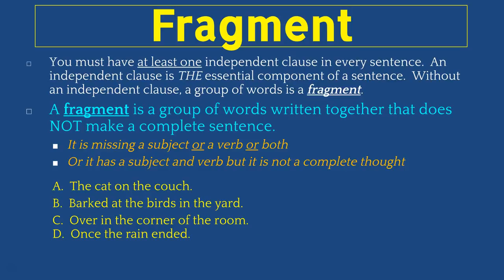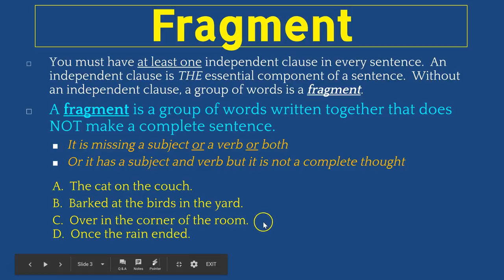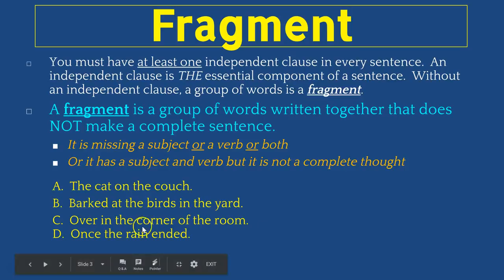Look at letter C: 'over in the corner of the room.' In this group of words, we're missing both the subject and the verb. What we have here are just a couple of prepositional phrases, and phrases are always sentence fragments.